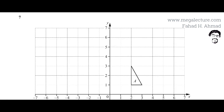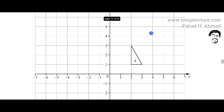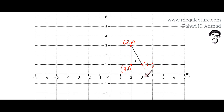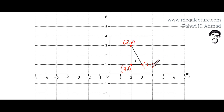This math question is about transformation. There's a triangle given on the grid and I'm marking the three points. The first point has X equal to 3 and Y equal to 1, so it's (3,1). The second point is (2,1) and the third point has X equal to 2 and Y equal to 3, so it's (2,3). I've marked those three points of Triangle A.